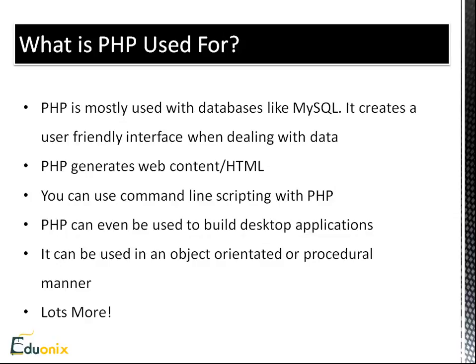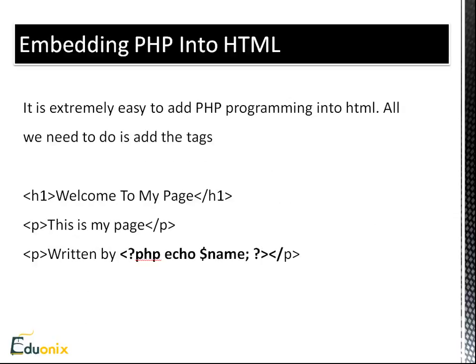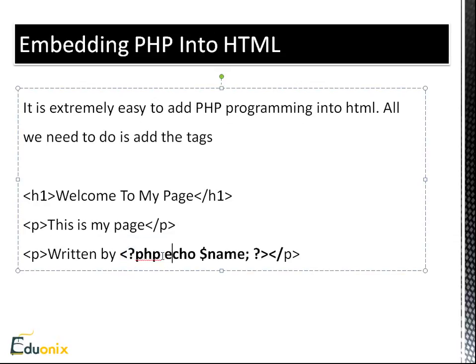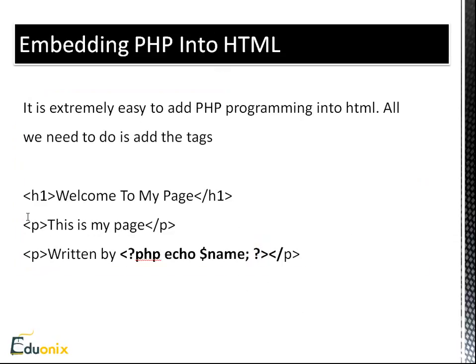To embed PHP inside an HTML document is extremely easy. Here we have an h1 tag, a paragraph, and another paragraph where we have 'written by' and then an opening PHP tag. We're echoing out a variable — echo is similar to document.write in JavaScript, it just prints something out on the screen. Then we have the semicolon; in PHP you do need the semicolon, unlike JavaScript where it's optional. Then we have the closing tag, which makes it a very desirable language.